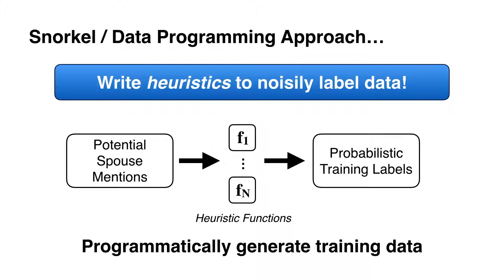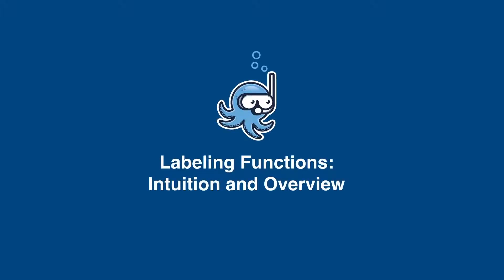This bottleneck is really what informs the entire idea behind Snorkel and data programming. The key intuition is that instead of manually labeling data, we can write heuristics to programmatically label data. This allows us to capture some of the structure of annotation but scale it up to arbitrarily large collections of training data. This idea we call labeling functions, and we'll go about building some intuition on what these actually encode.